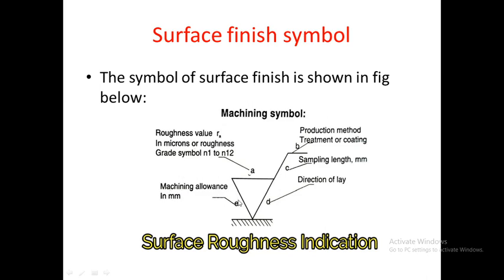The second component is the machining allowance, represented by the letter E. Machining allowance is the extra amount of material left on the workpiece that has to be removed during machining in order to obtain the required surface finish. The third is the direction of lay, indicated by letter D. Direction of lay indicates the marks of the cutting tool — whenever the cutting tool moves on the surface, it leaves impressions in the direction of its motion.